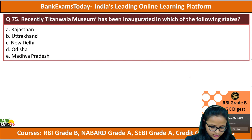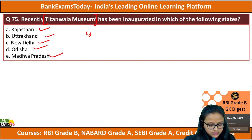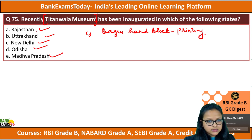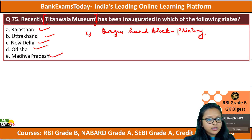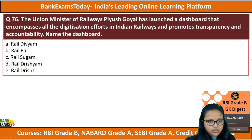Question number 75: recently, the Tita Walla Museum has been inaugurated in which of the following states? Rajasthan, Uttarakhand, New Delhi, Odisha, or Madhya Pradesh. The museum is associated with Bagru hand-block printing. The correct answer is Rajasthan.